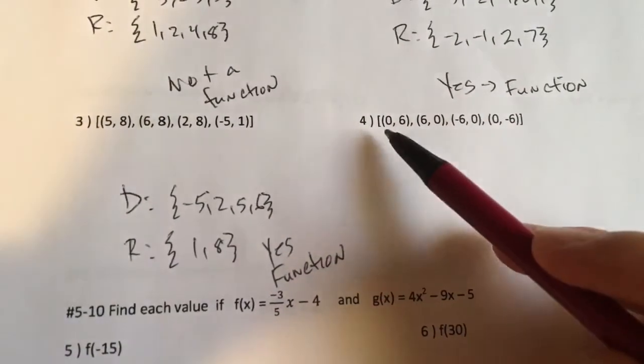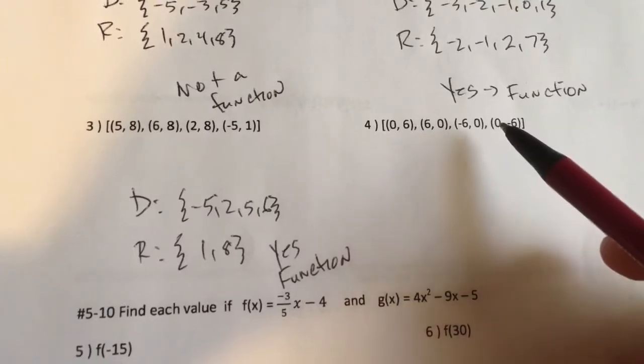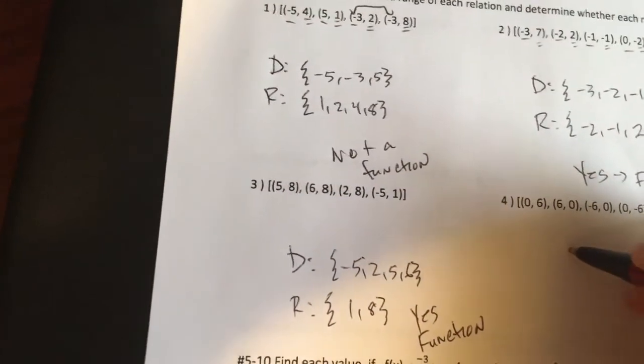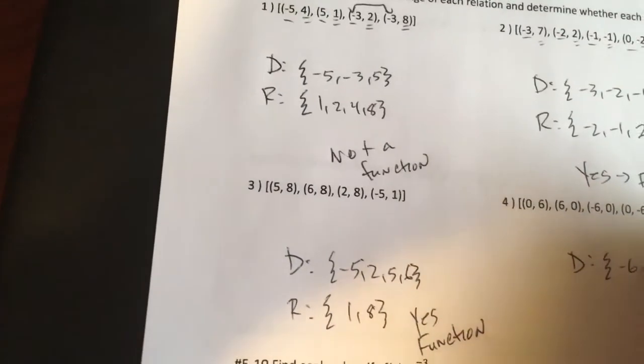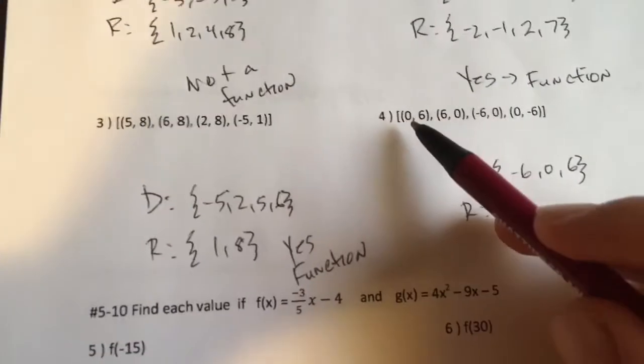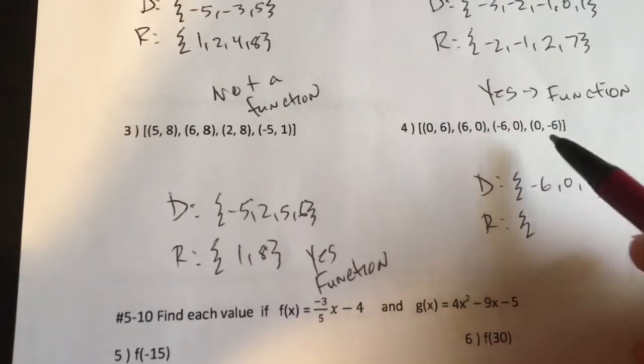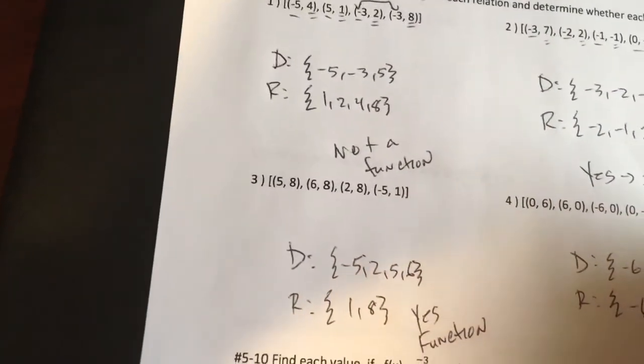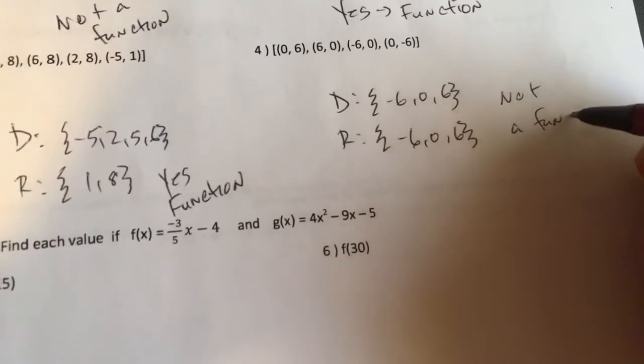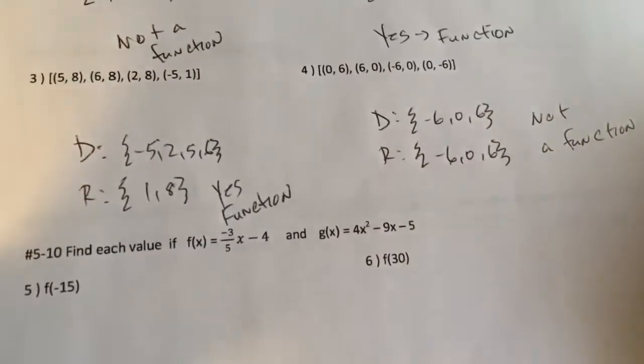All right. On the next one, folks, I got 0 for the x, 6, negative 6, and another 0. So my domain, negative 6, 0, 6. My range, 6, 0, 0, negative 6. This is a circle with a radius of 6 centered at the origin. It is not a function. I see duplicate x's. I see 0 twice.